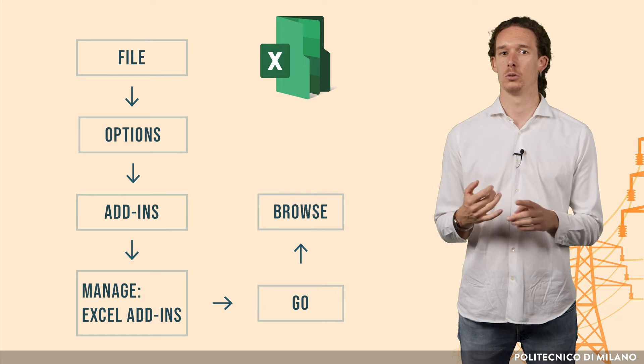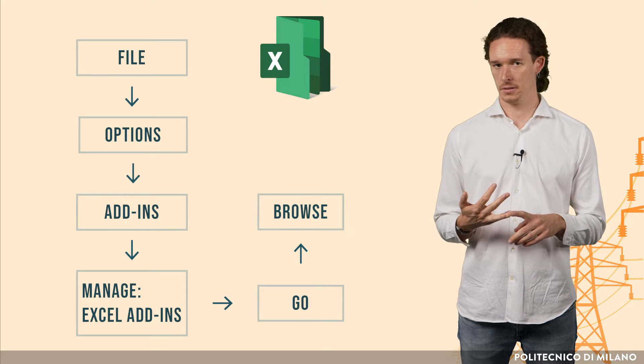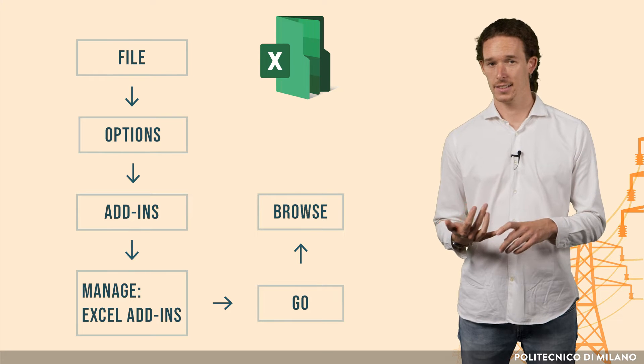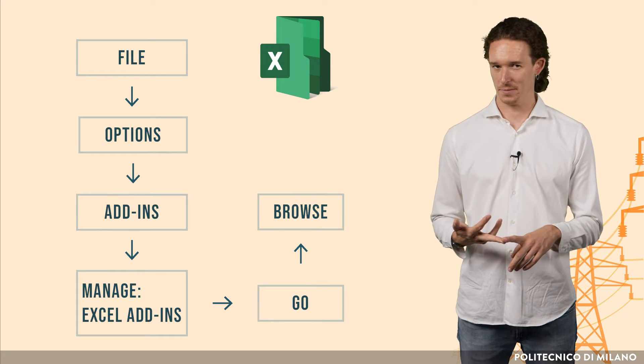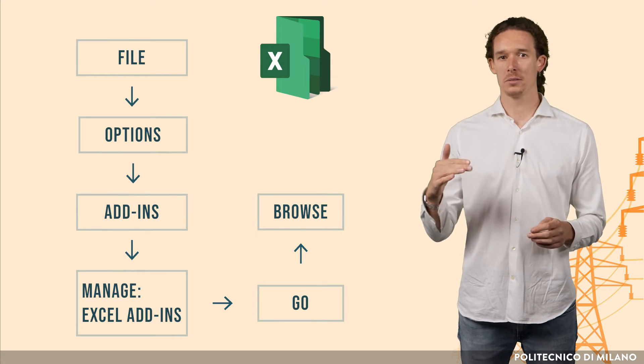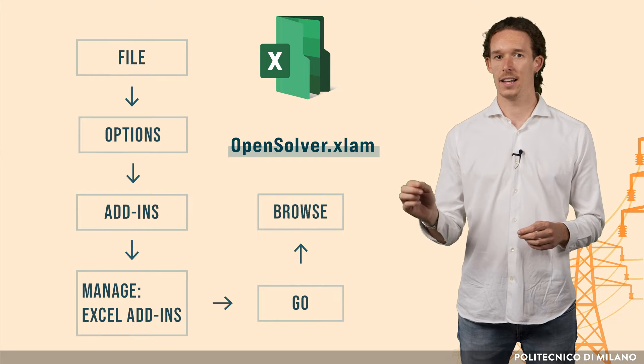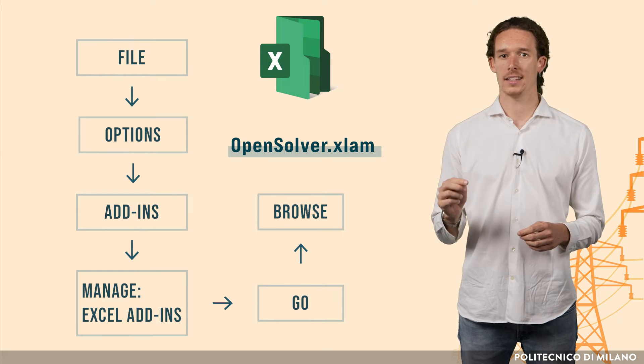Save the folder you downloaded in a safe place. Then, from Excel, go to File, Option, Add-Ins, Manage, Excel Add-Ins, Go, Browse. And browse to the folder where you just saved OpenSolver and select the file OpenSolver.xlam.